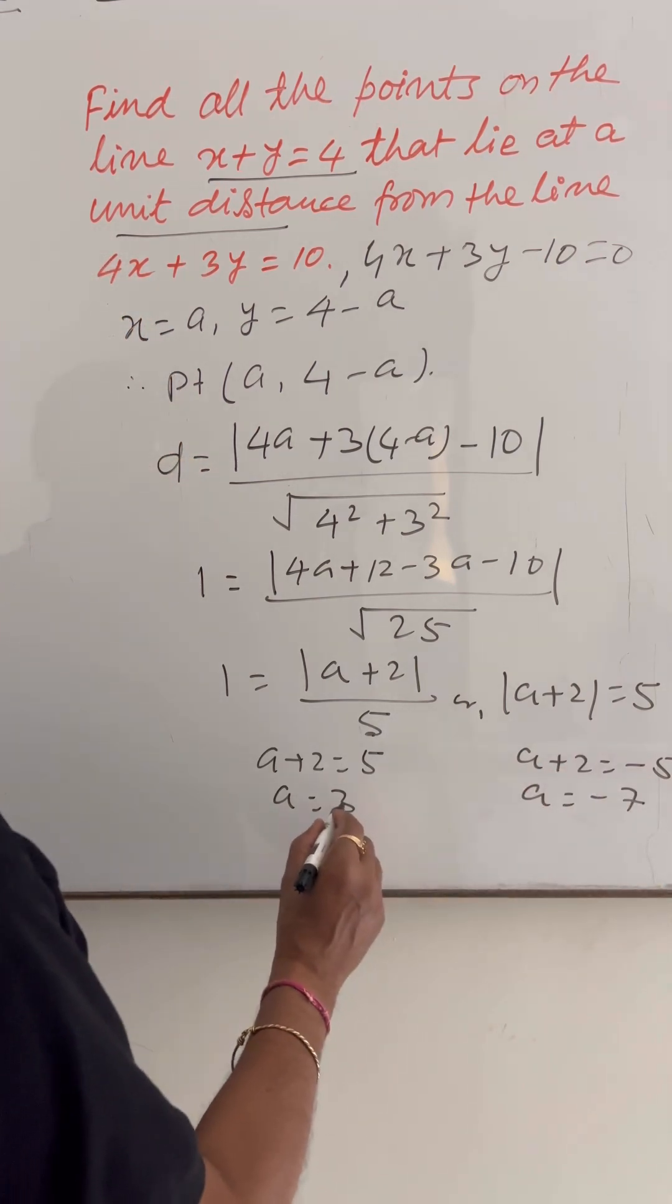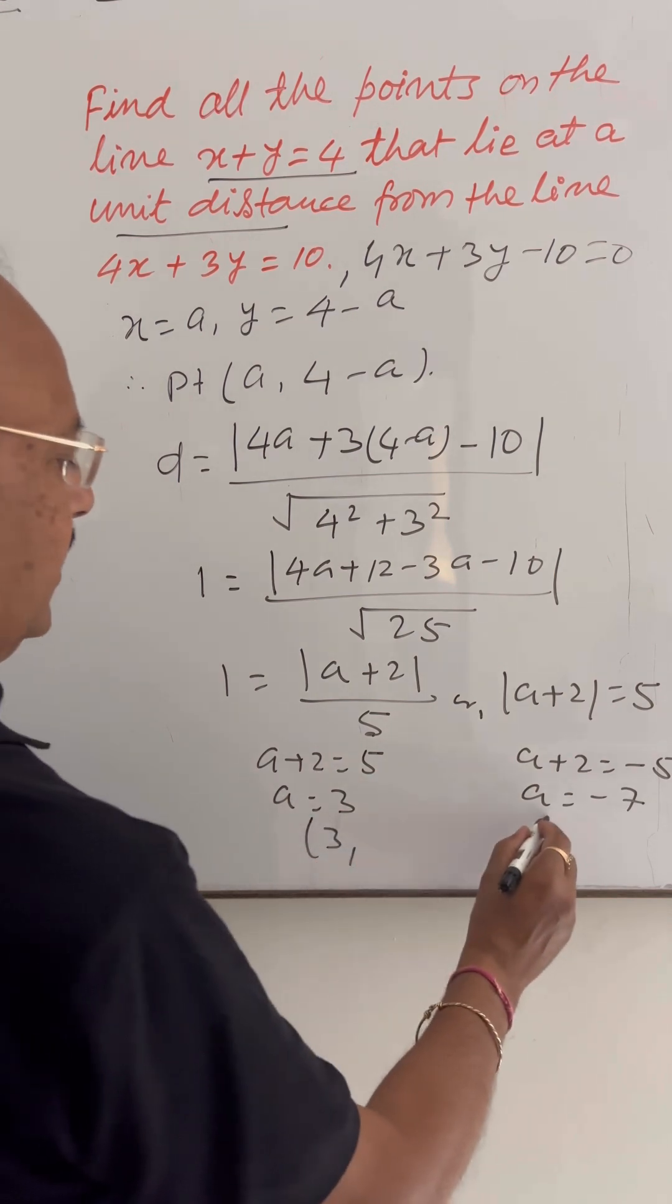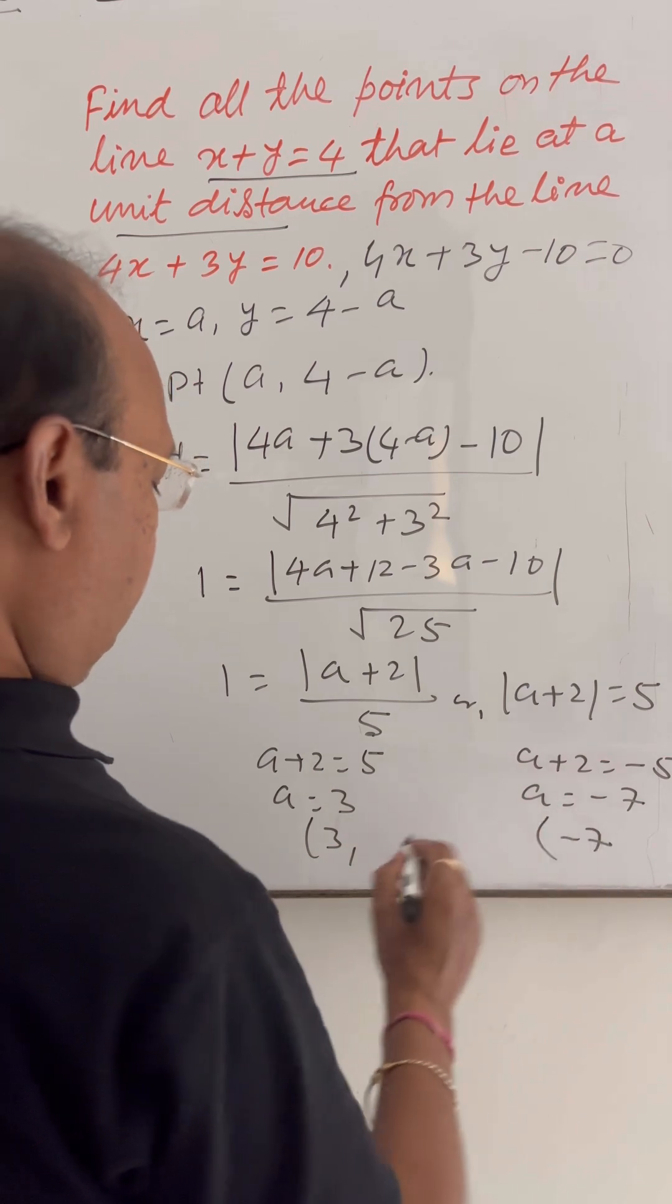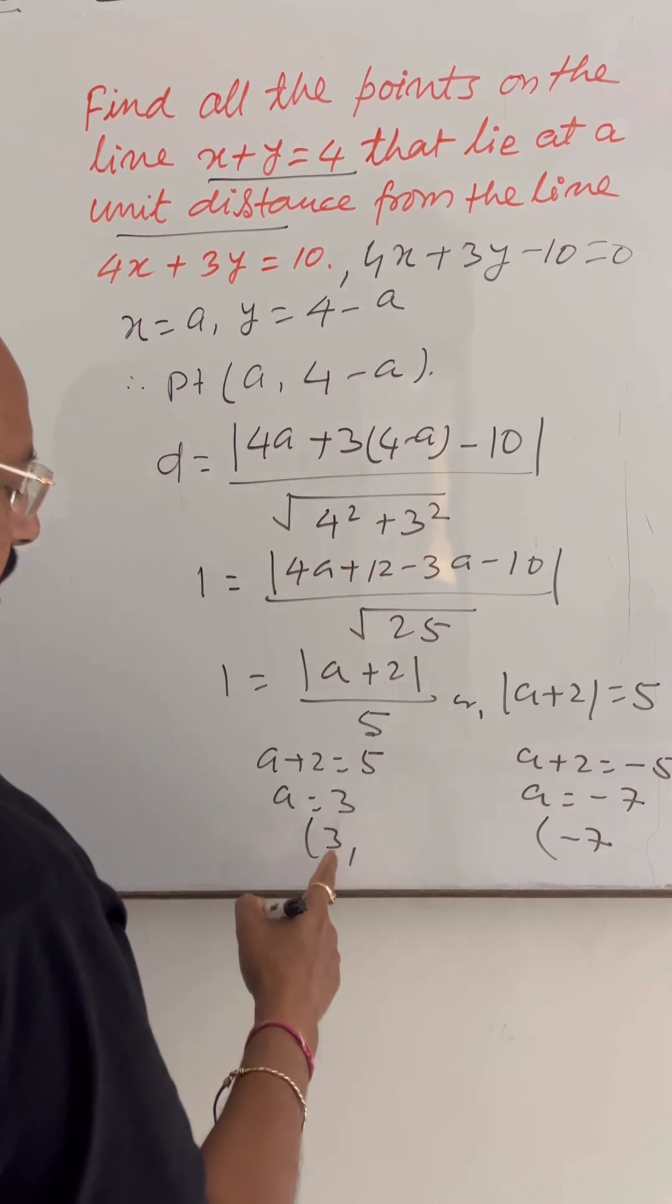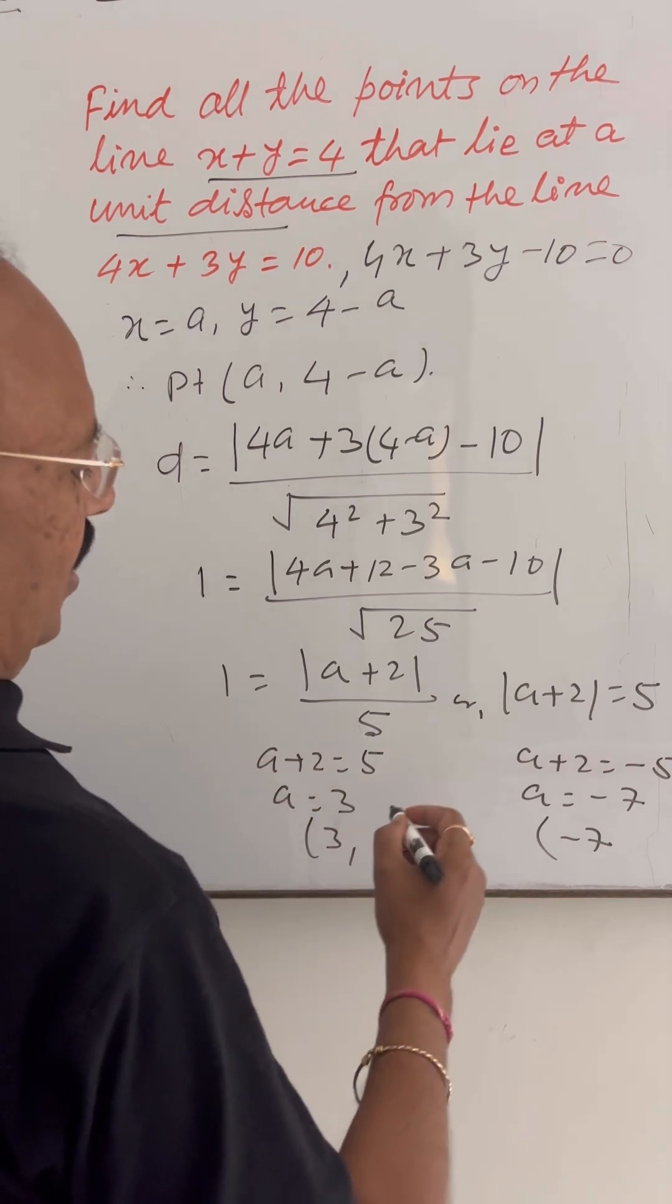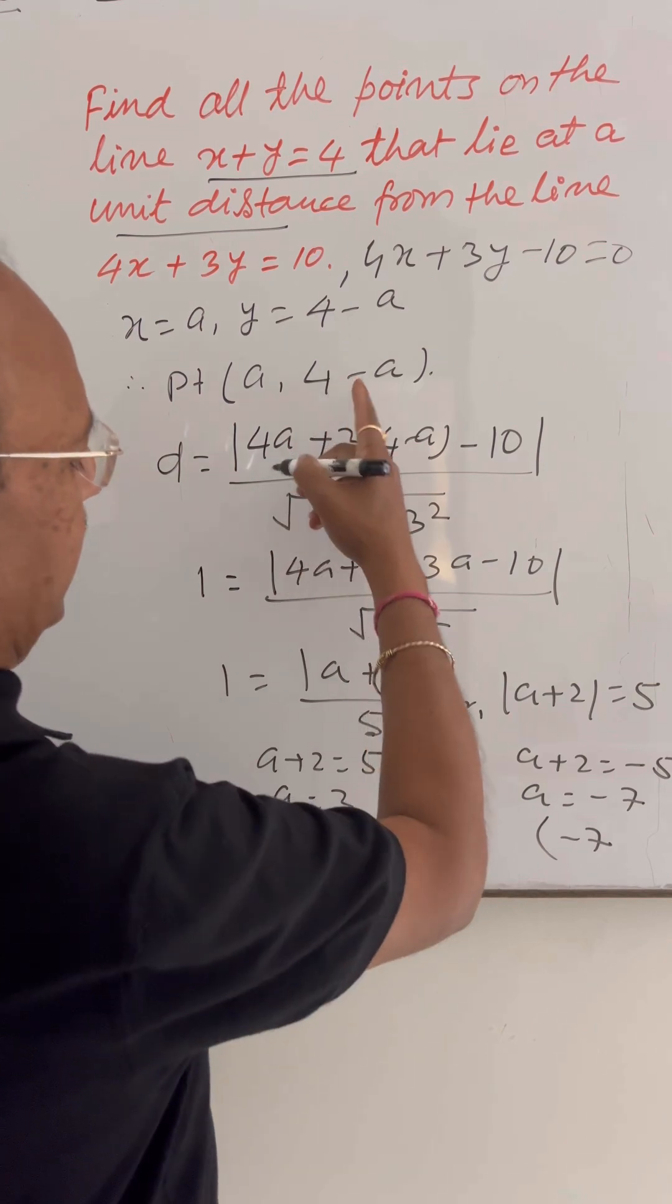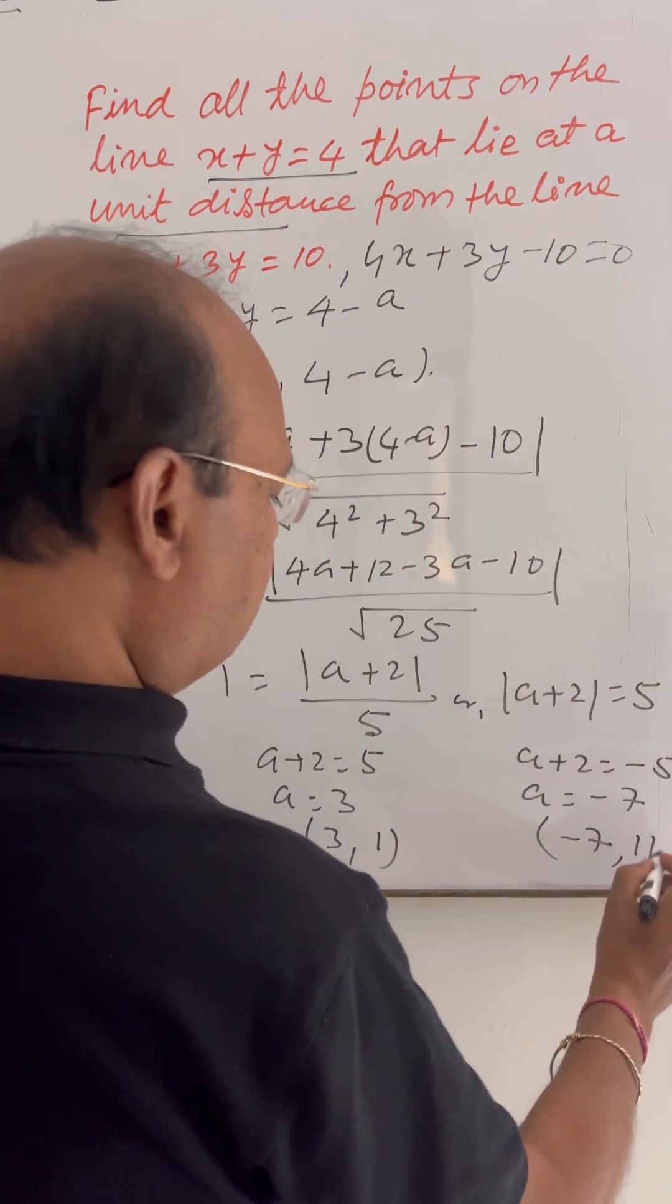So, one coordinate a is 3 here. And in this case, one coordinate a is minus 7. Another coordinate is, y coordinate is 4 minus a, means 4 minus 3, that is 1. And here, 4 minus a, means 4 minus of minus 7, that is 4 plus 7, that is 11.